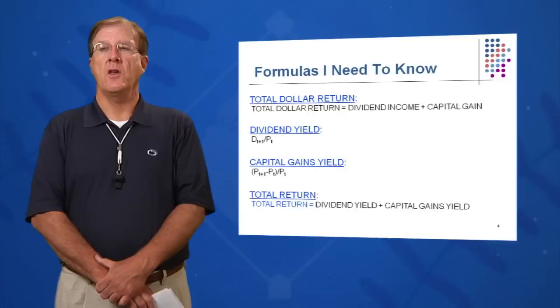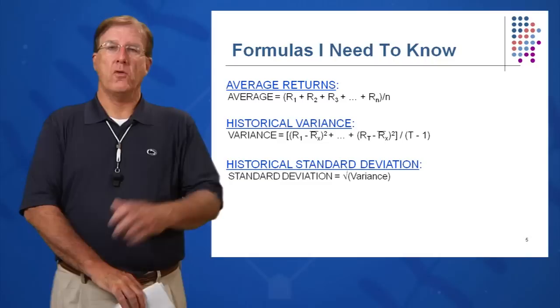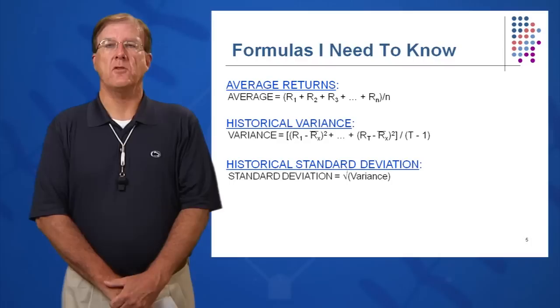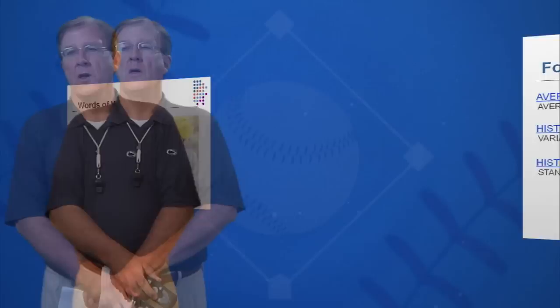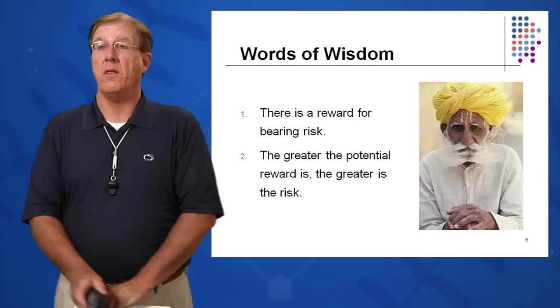We'll look at some equations that will help us: what is the average return, what is the total return — dividend yield plus capital gains yield on a stock — and then how to calculate statistical measures like variance and standard deviation that will help us measure and hopefully predict what might happen in the future. Some words of wisdom: great underlying rules of finance — there's a reward for bearing risk, and the greater the potential reward, the greater the risk.